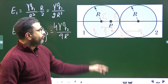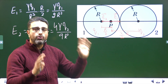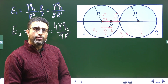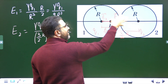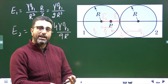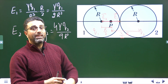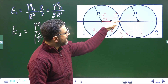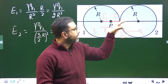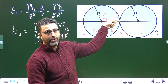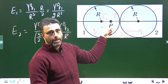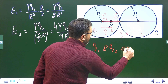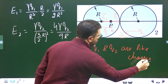For the net field to be zero at point P, the two fields must be in opposite directions. If both spheres are positively charged, E1 points away from sphere 1 (rightward) and E2 points away from sphere 2 (leftward), so they are in opposite directions. The same holds if both are negatively charged. However, if they have unlike charges, E1 and E2 would point in the same direction, so the field cannot cancel. Therefore, Q1 and Q2 must be like charges — both positive or both negative.